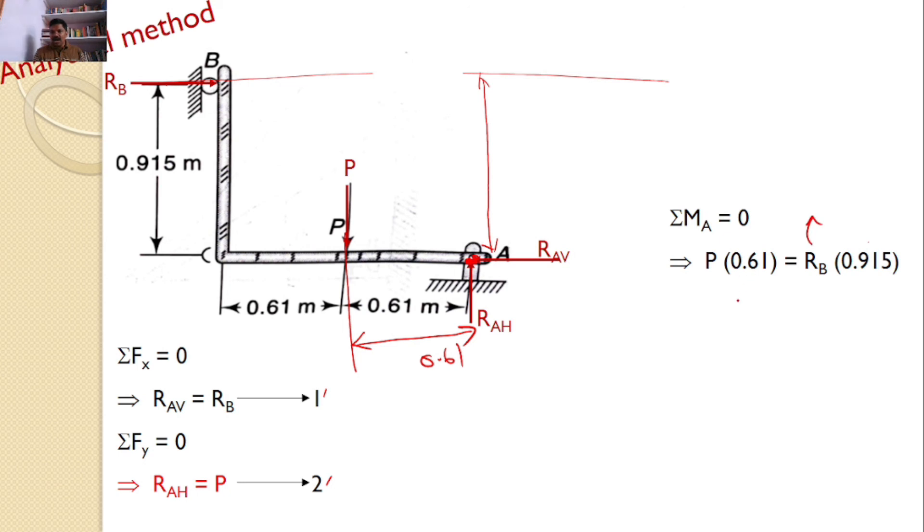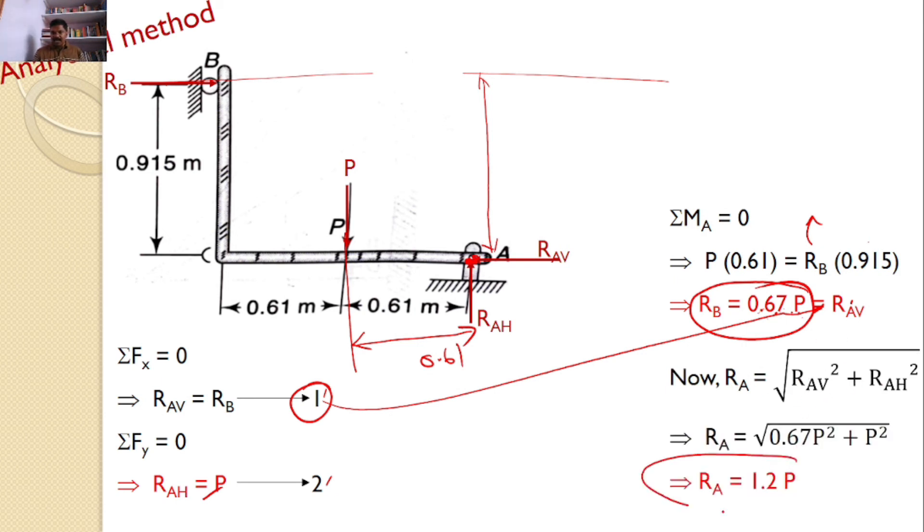Applying moments about point A equals 0: P times 0.61 equals Rb times 0.915. Hence, Rb equals 0.67P. From equation 1, Rav also equals 0.67P. Since Rah equals P and Rav equals 0.67P, I can find Ra equals the square root of Rah squared plus Rav squared, which gives Ra equals 1.2P. These are the answers using the analytical method.